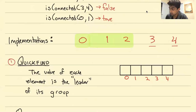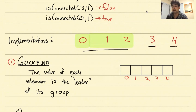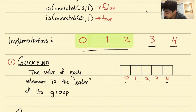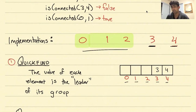How Quick Find works: every group has a leader. In our example, we have three groups — the 0, 1, 2 group; the 3 group; and the 4 group. We store an internal array. For each element, its value is the leader of its group. Since 0, 1, and 2 all belong to the same group, they all have the same value. For the independent groups, 3 has value 3 and 4 has value 4. For the group containing 0, 1, 2, it doesn't matter which we choose as leader — I'll say they all have value 0. We've now captured the group relationships in an array.